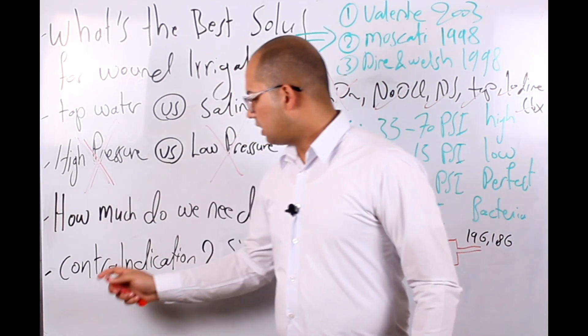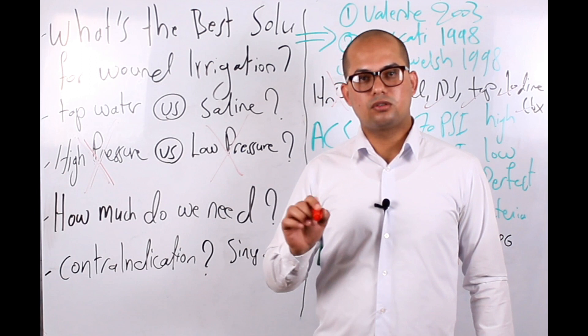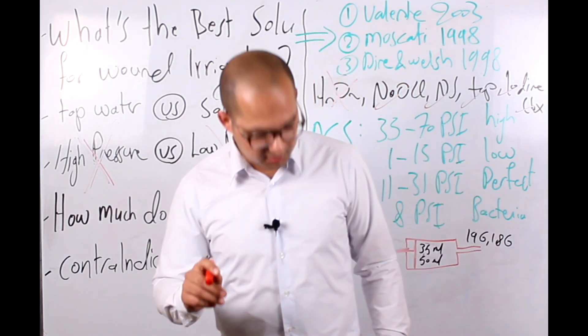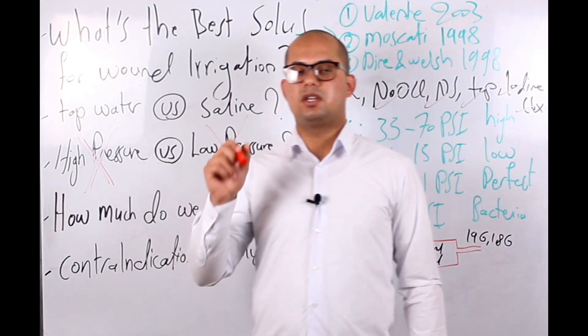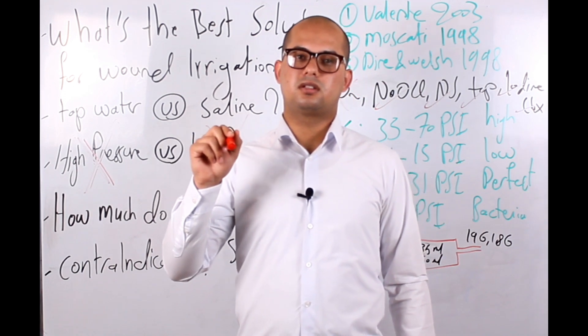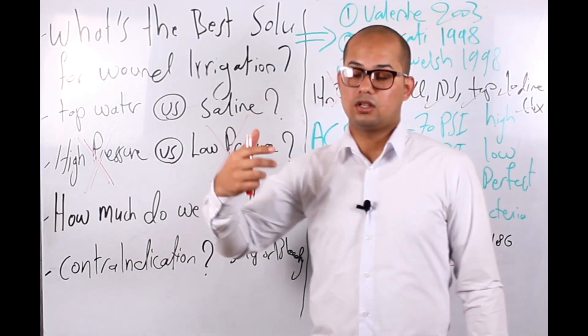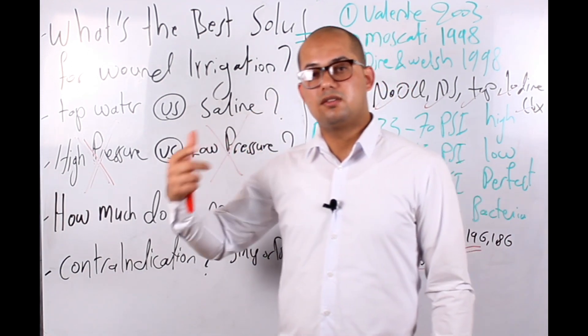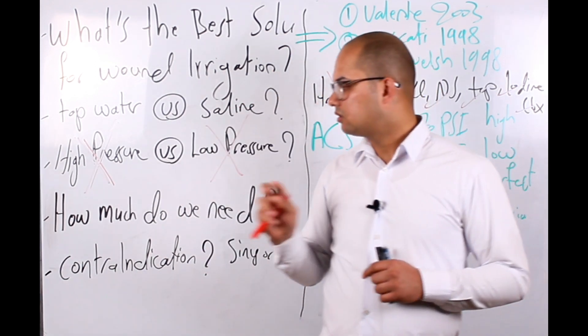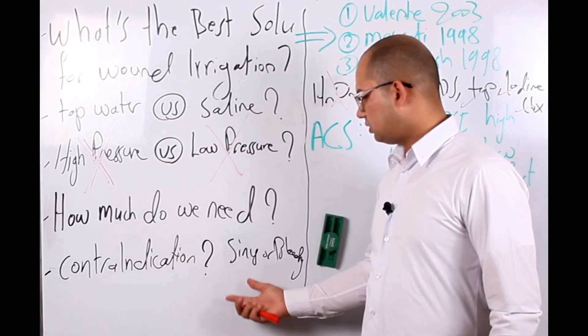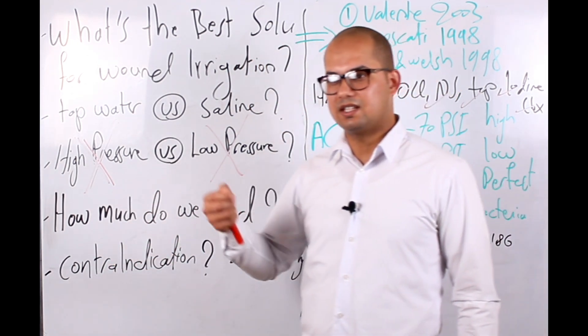Last thing: contraindications for wound irrigation. The primary contraindication for wound irrigation is that whenever you have sinus tract or fistula, you have to determine the extent of that fistula. Because it is a fistula, it is a tract. If you did irrigation, this irrigation force may drive the bacteria deep into the tissue. So that please, whenever you have fistula or bleeding, don't go for wound irrigation unless you have exactly the extent of that fistula.